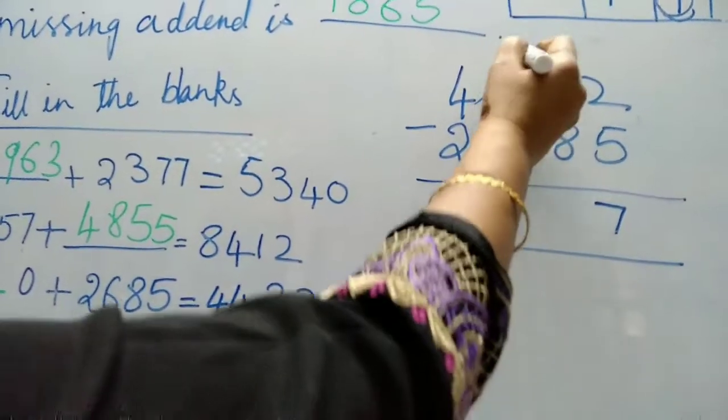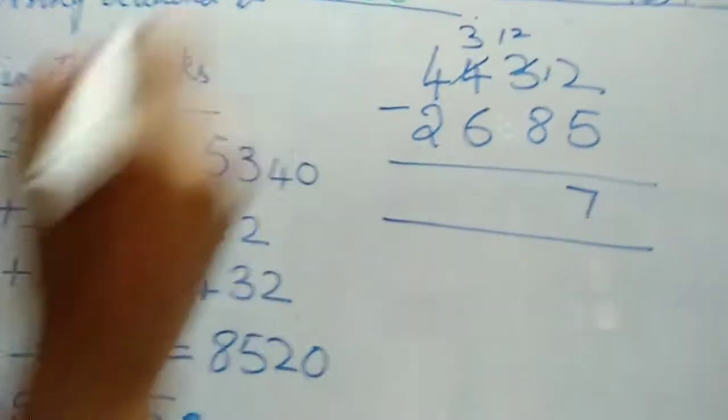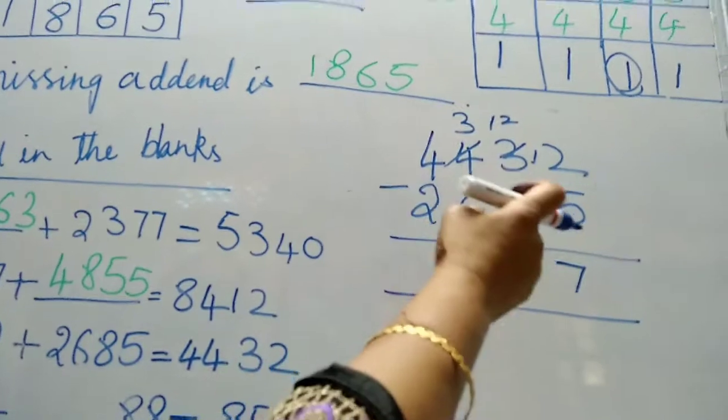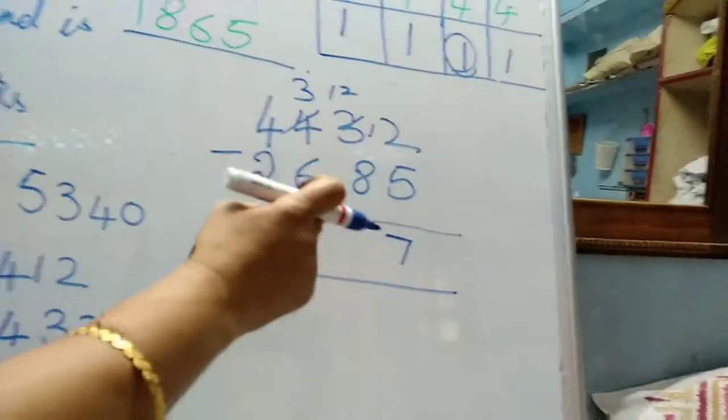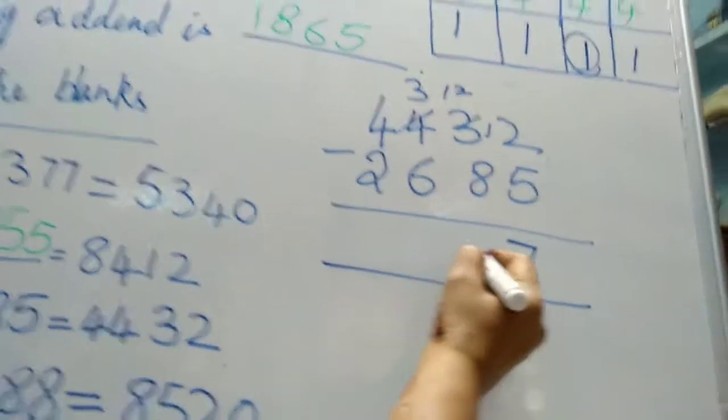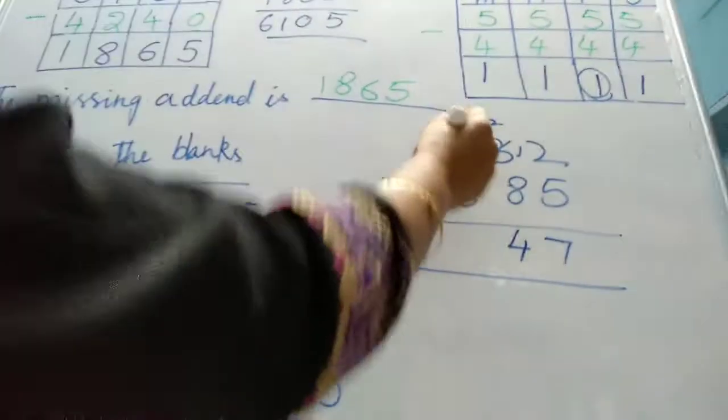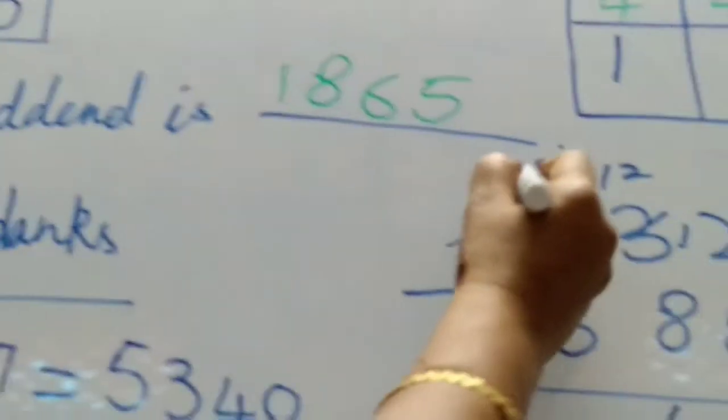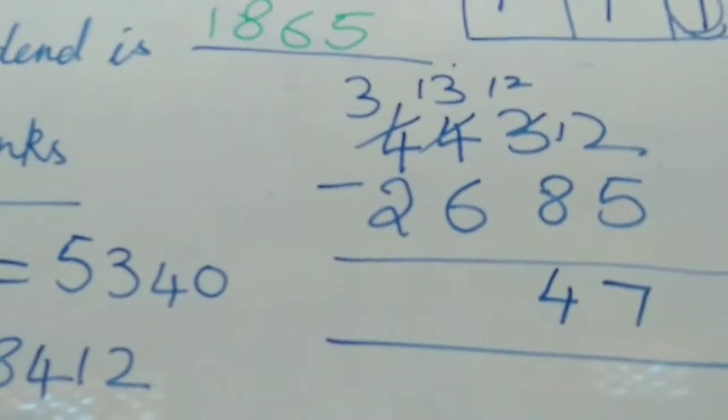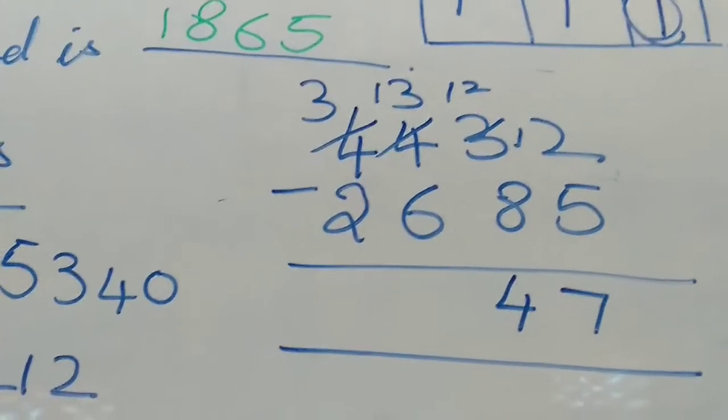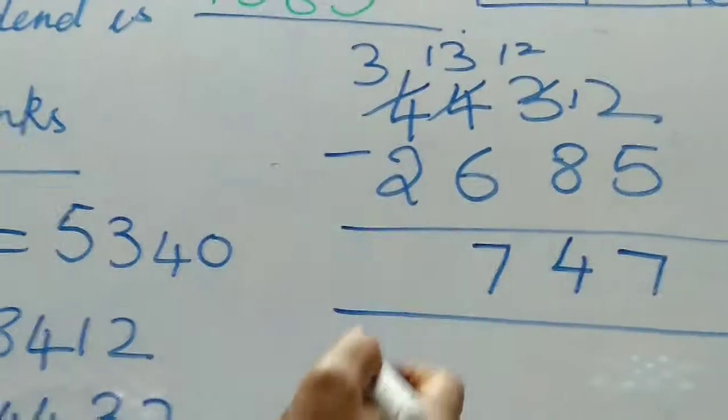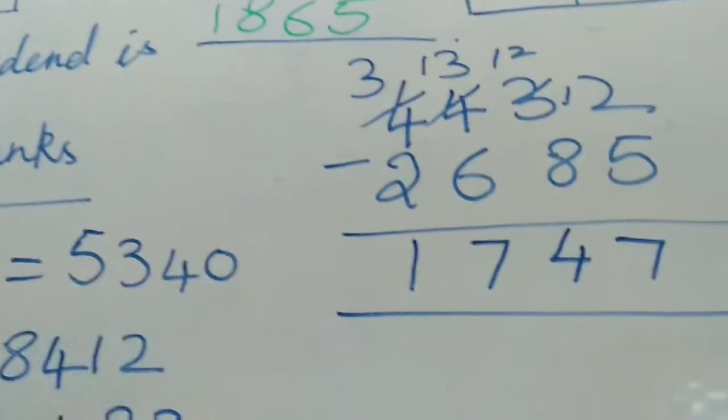From 2, you cannot take out 8. Borrow 1, that's 12. From 12, 8 goes, count to 12, that's 4. Borrow 1, that's 13. From 13, 6 goes, count to 13, that's 7. 3 minus 2, 1. This is the answer.